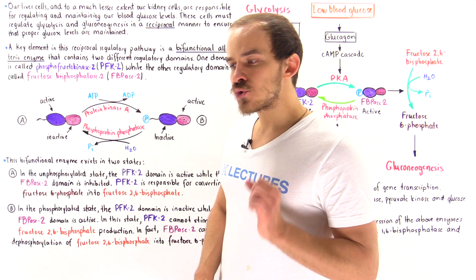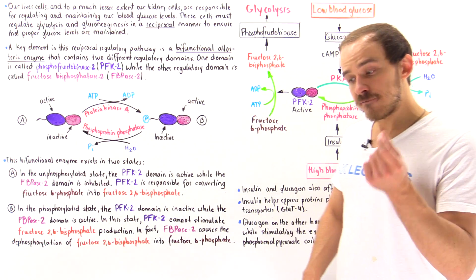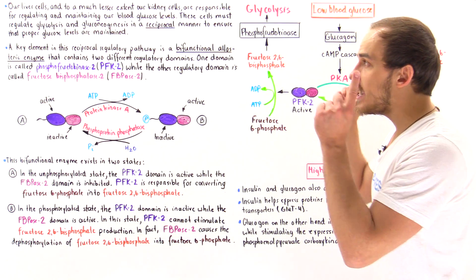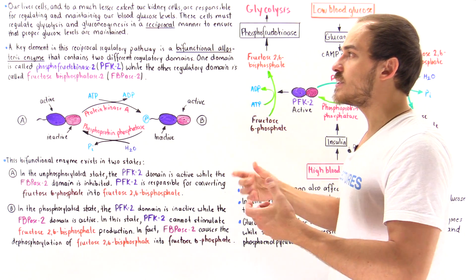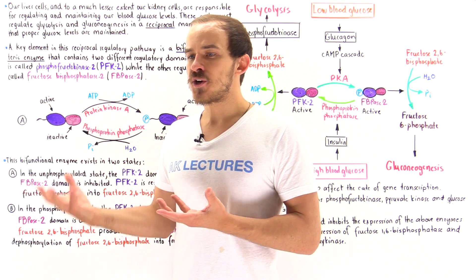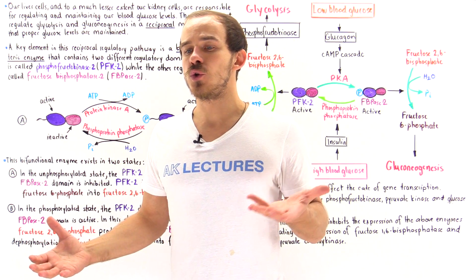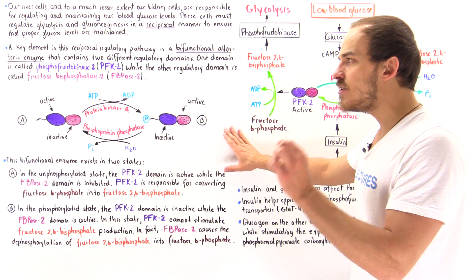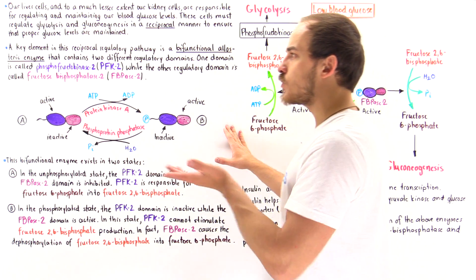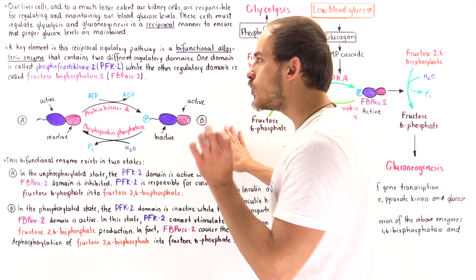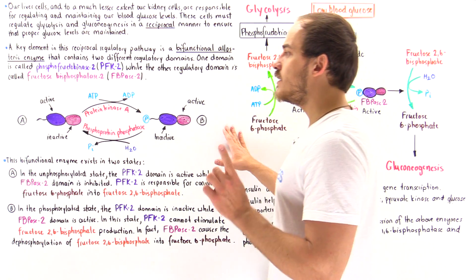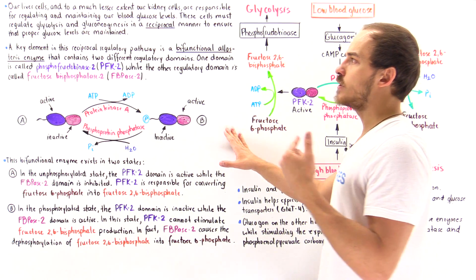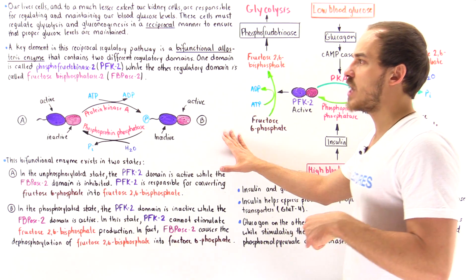Previously, we saw how the energy charge value within the cell — the ratio of ATP to AMP — can actually be used to regulate the process of glycolysis and gluconeogenesis. Although that's true, for liver cells and kidney cells, because they regulate and maintain glucose levels, they also use the glucose levels in the blood to determine whether glycolysis or gluconeogenesis predominates.